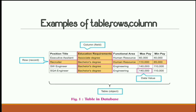Here you can see a table with five columns: position title, educational requirement, functional area, max pay, and min pay. The rows include entries like executive, assistant, recruiter, software engineer, and SQA engineer. Rows are also called records, columns are also called fields, and any individual value entered inside rows and columns is called a data value.